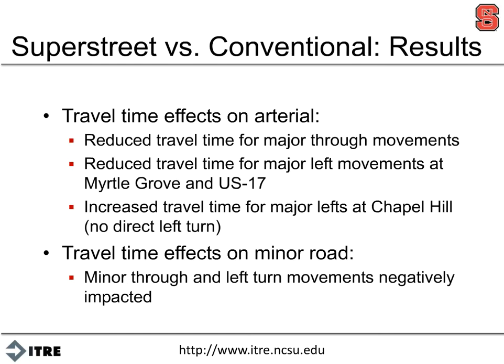The results basically found that the travel time along the major arterial reduced significantly. All sites but Chapel Hill allowed the left turn from the arterial — the Chapel Hill site had a weave problem so that was not allowed, which is very unusual. We saw reduced travel time for the major left turn movements at two sites, but increased travel time for the major left where it was not allowed, since it had to go through the main intersection, do a u-turn, and come back and make a right. The minor road did see minor through and left turn movements negatively impacted.